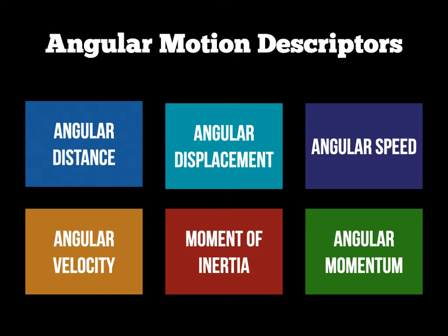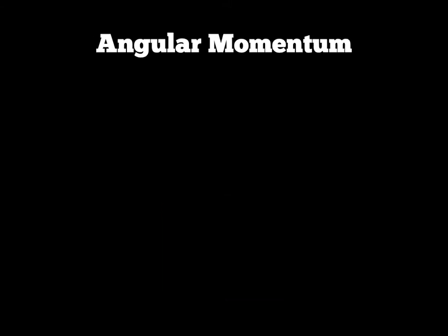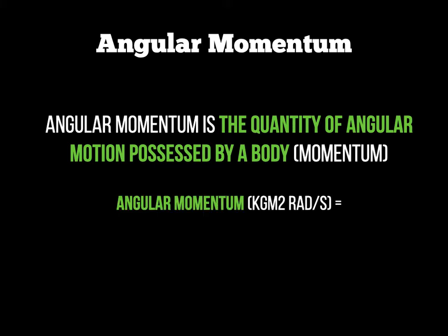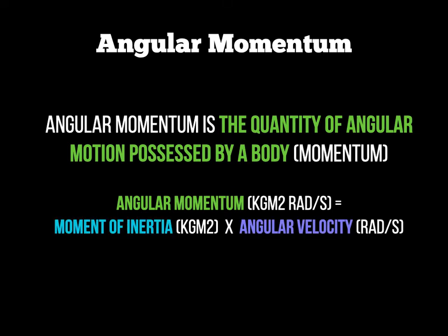This is quite complicated, so I would suggest you go over this screencast a couple of times as you make your notes to comprehend it correctly. Angular momentum is the quantity or amount of angular motion possessed by a body — an object or a person. It's the amount of rotation going on, and it is calculated by the moment of inertia multiplied by angular velocity. Moment of inertia is how resistant to movement the object is, and angular velocity is how fast the body is actually spinning.